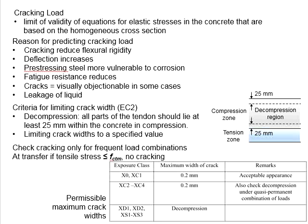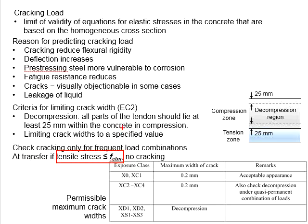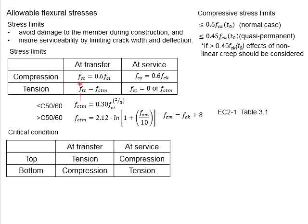You need to check for cracking only for the frequent load combinations. At the transfer stage, if the tensile stress in the concrete is less than FCTM, the concrete is assumed to be without cracking. This explains the reason that at the transfer stage, the stress limit in tension is limited by FCTM.